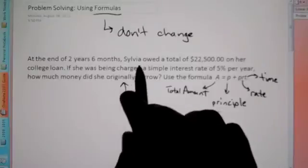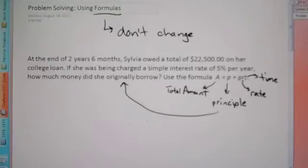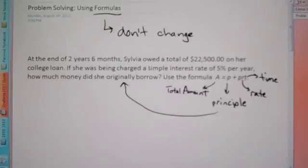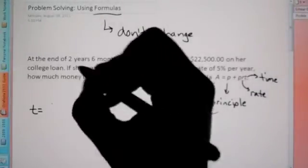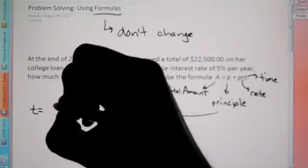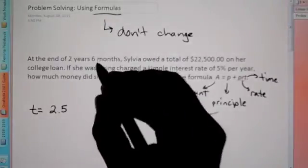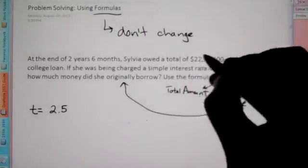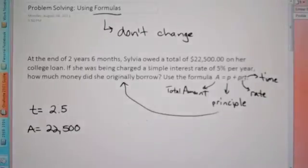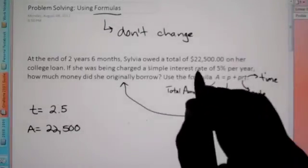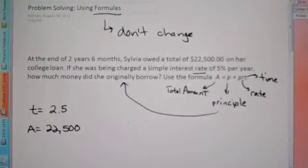At the end of two years, six months — so whenever you're doing a word problem, always write down information that you know, especially when you know a variable is a certain amount. Two years, six months — that's time. Six months is half of a year since there are 12 months, so instead of saying two years, six months, we can say 2.5. She owed a total, so we know A is equal to $22,500. She was charged a simple interest rate — so rate right there — rate of 5%.